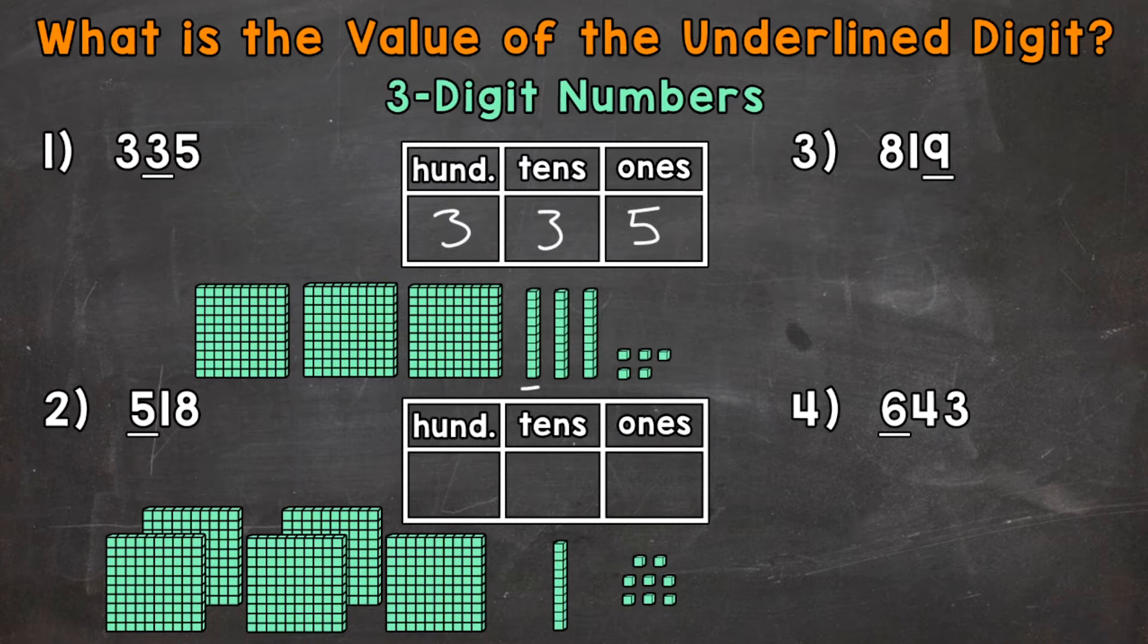One, two, and three. So the value of that three is going to be 30. Again, because that three is in the tens place, therefore it represents three groups of ten. It has a value or worth of 30.